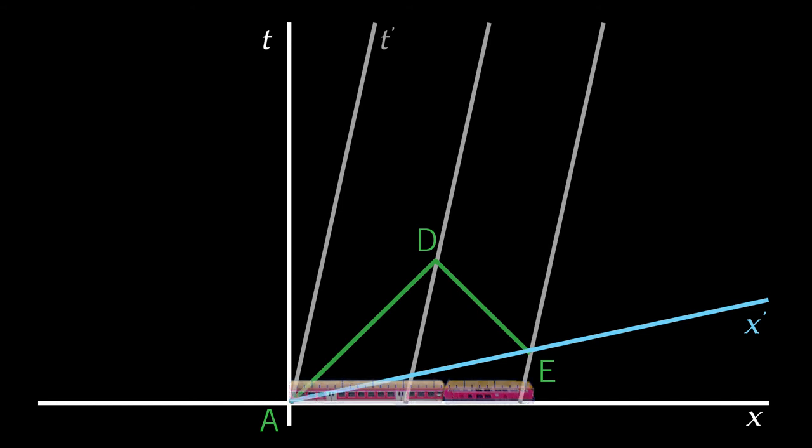So all the points along x prime have t prime equals zero. And all the points along t prime are such that x prime equals zero.